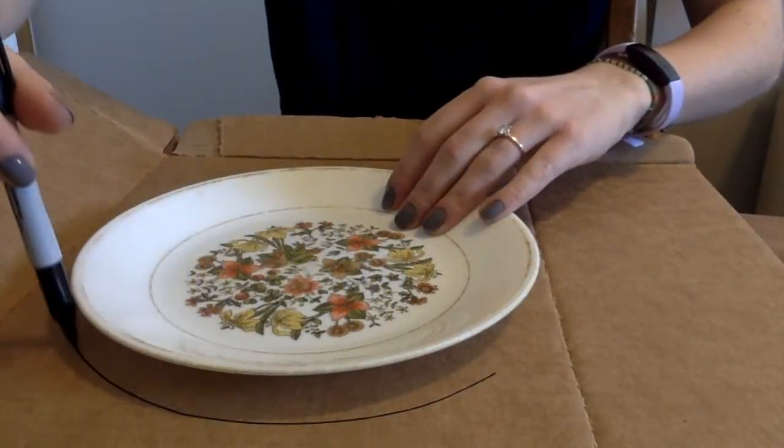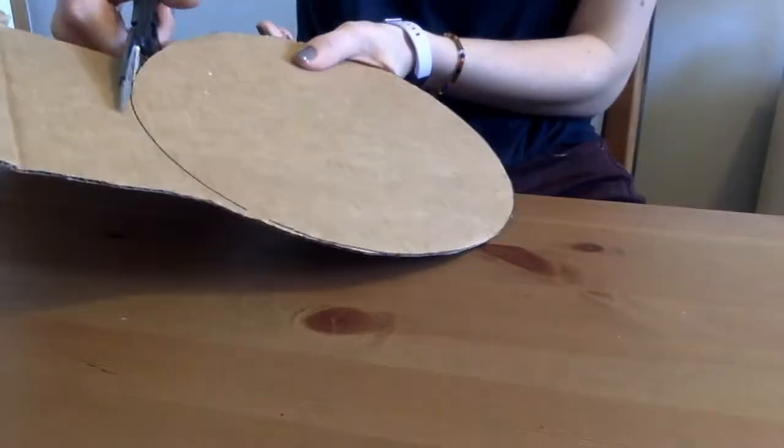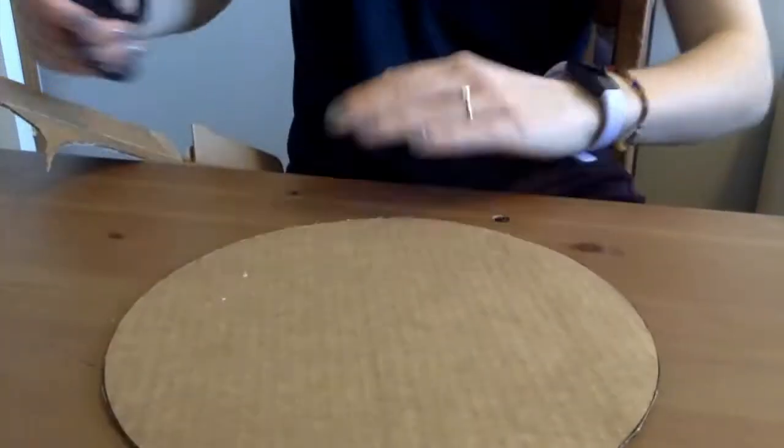First we will make our base for our wind vane out of the thick cardboard. Find a circular shape to trace. I used a dinner plate so anything works. We want this circle to be pretty big, cut out this circle from the cardboard.